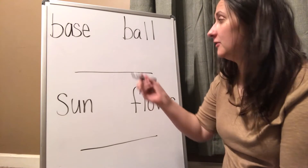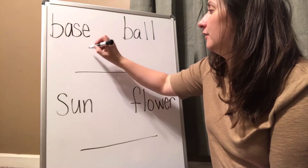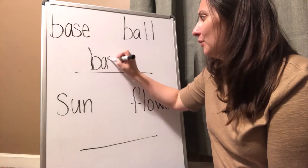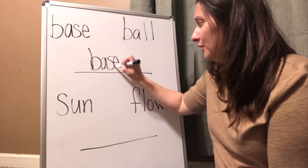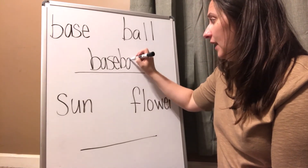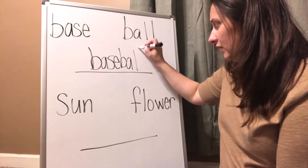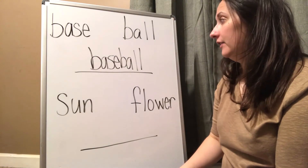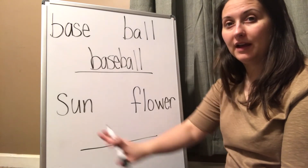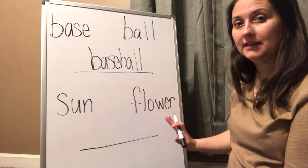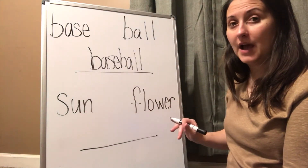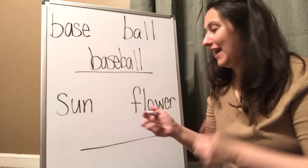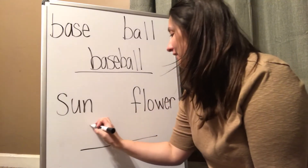Now remember, you cannot leave a space between those, or they just remain two separate words on their own. So to make it a compound word, you have to make sure that you add them together — baseball. Now let's look at the next one. Sun and flower — put them together and you get sunflower. Very good.